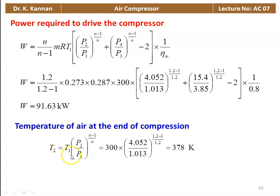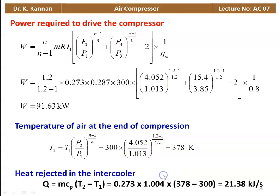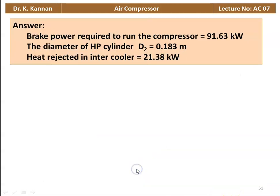Temperature at end of LP compression: T2 = T1 × (P2/P1)^((n−1)/n) = 300 × (4.052/1.013)^(0.2/1.2) = 378 K. Heat rejected in the intercooler: Q = M × Cp × (T2 − T3) = 0.273 × 1.004 × (378 − 300) = 21.38 kW. Answers: brake power = 91.63 kW, HP cylinder diameter D2 = 0.183 m, heat rejected = 21.38 kW.